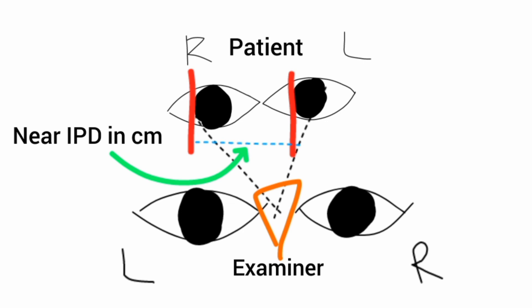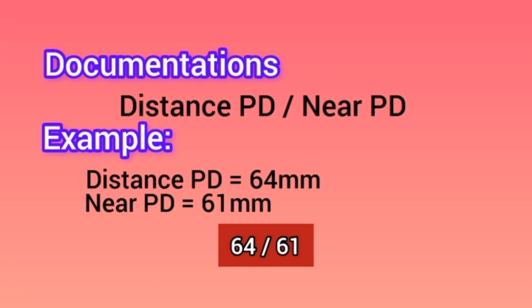This is how you measure both distance IPD and near IPD. For documentation, you write distance PD over near PD — for example, if distance PD is 64 mm and near PD is 61 mm, you write 64/61. This is how you calculate the inter-pupillary distance for any patient. For any queries, you can comment in the comment section — thank you.